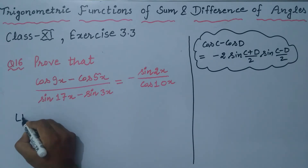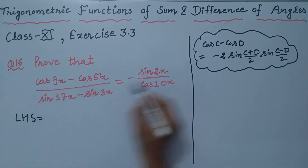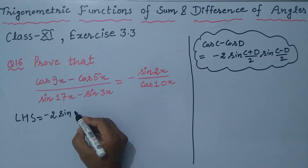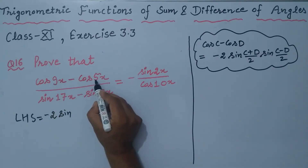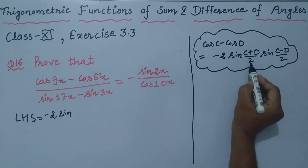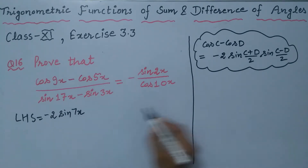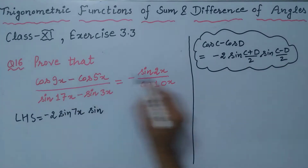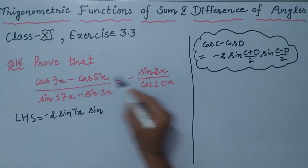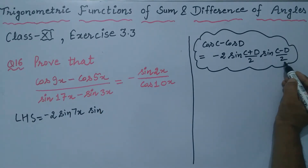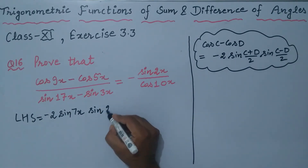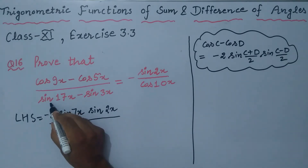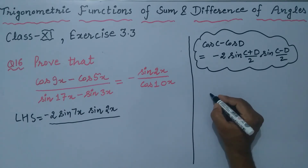The left hand side numerator becomes minus 2 sin of (9+5)/2 = 7x, into sin of (9-5)/2 = 2x. Then in the denominator we apply the CD formula again.